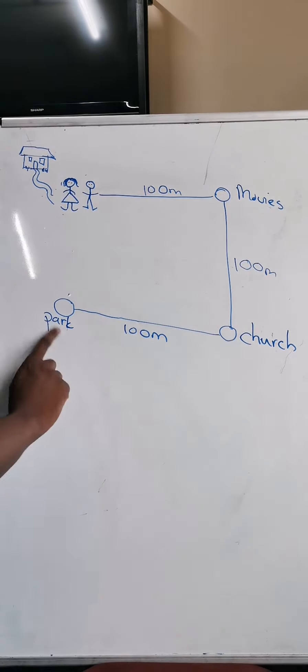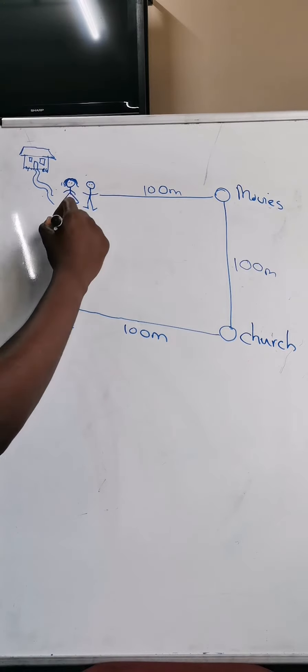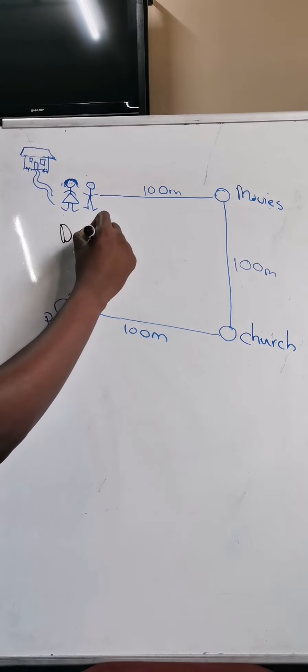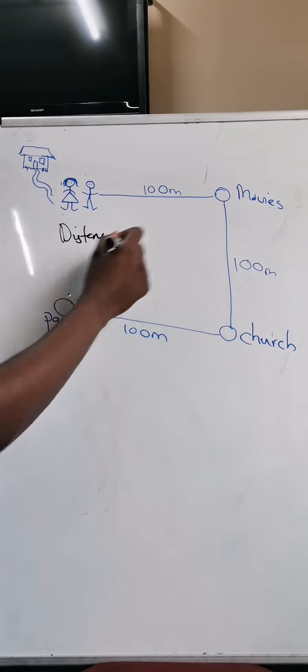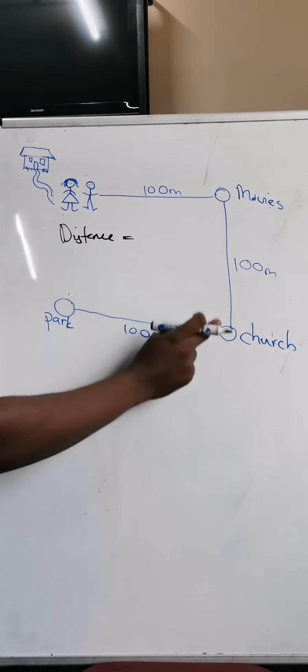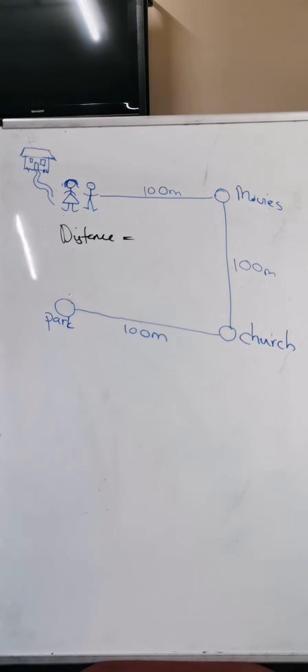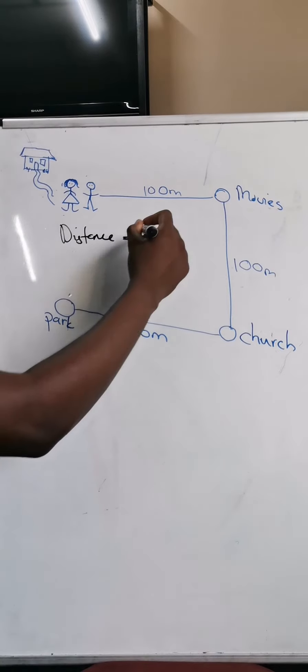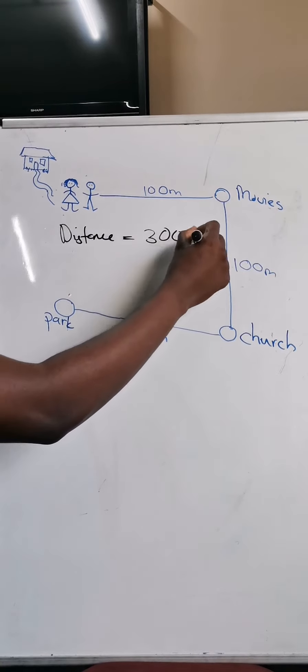And then they move from the church to the park. So we're now calculating distance. We're calculating the distance covered. What is the distance that they covered? They moved 100, then they moved another 100, then moved another 100, which amounts to 300 meters altogether.